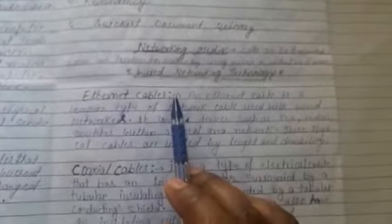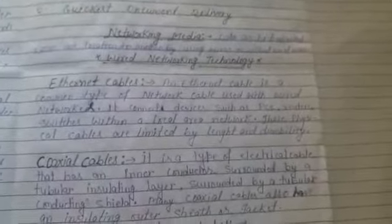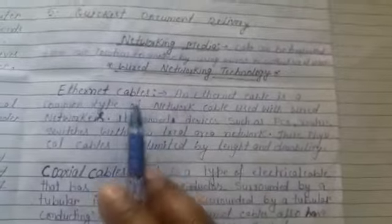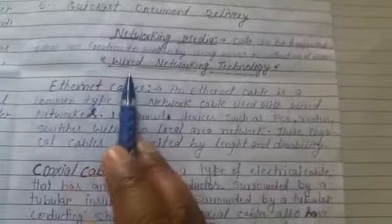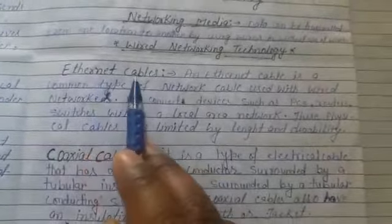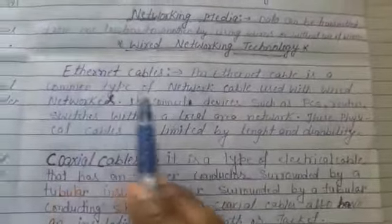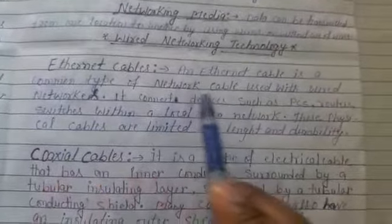In wired networking technology, information can travel from one place to another. For this we use wired networking or wireless networking. In wired networking technology, we have to know about the Ethernet cable. An Ethernet cable is a type of wire and is a common type of network cable.